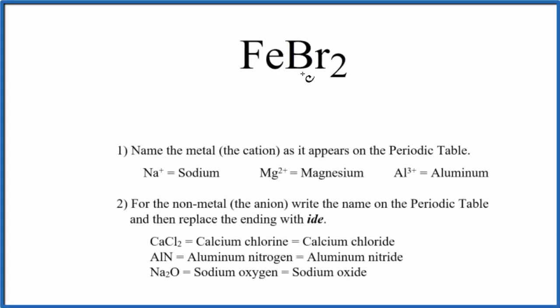To write the name for FeBr2, we first need to realize we have a metal and some non-metals. So when we have metal and non-metal, that's going to be considered an ionic compound, so we're going to name this as if it were an ionic compound.